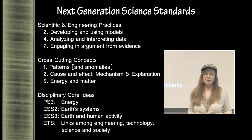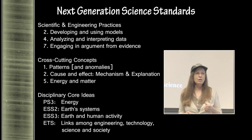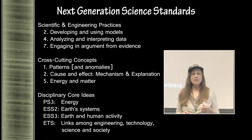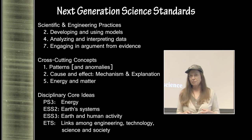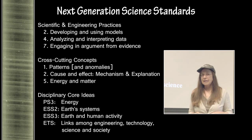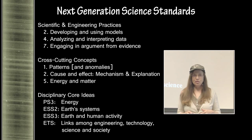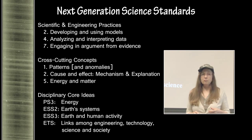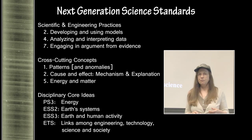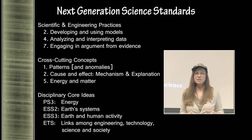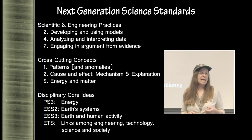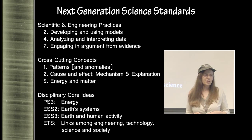What causes these anomalies to appear? What is the mechanism that produces them and how do you explain those? We are talking about energy and matter — volcanoes, solar proton events, high energy radiation from collapsing stars hundreds and thousands of light years away. Disciplinary core ideas include energy in the form of radiation and the pressure and heat that produces volcanic products. We are also talking about Earth systems, plate tectonics, and the meteorological cycle, which is very important for this ice core record.